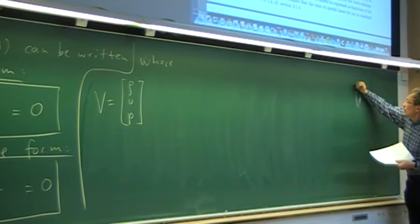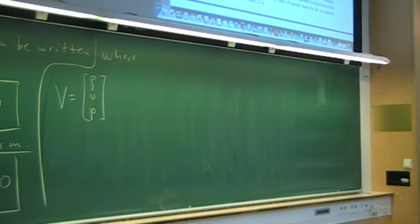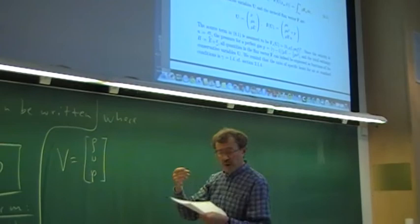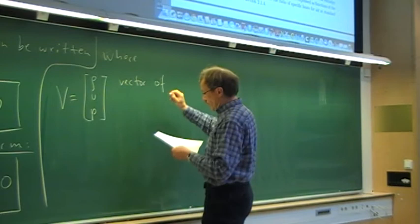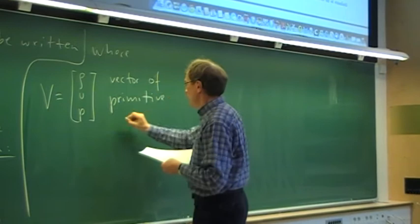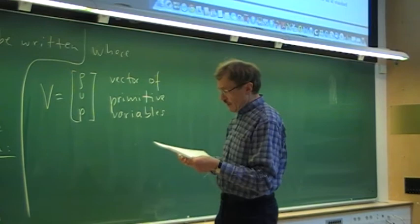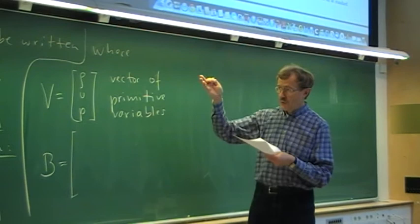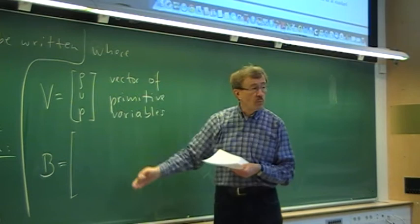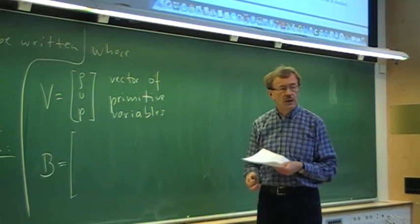To remind you: the conservative variables u are rho, rho*u, and rho*e. But the primitive variables v are the variables we have a more intuitive understanding of — density is the same, velocity, and pressure. So that is the vector of the primitive variables.